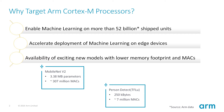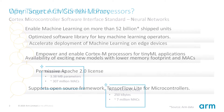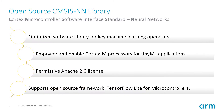This reduction in memory and compute requirement makes machine learning on edge devices a realistic option. That said, the improvements in model design and frameworks are just the beginning. The advancements in model and framework design open the door for optimized libraries like CMSIS NN.